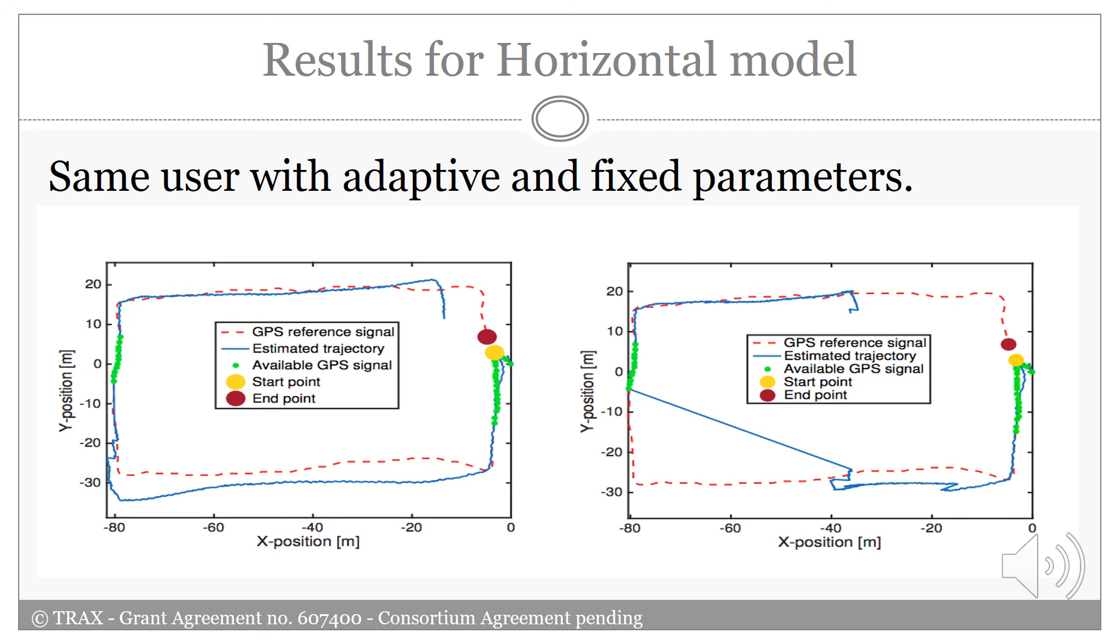In the right figure, the fixed threshold is used and applied to the same measurement set as used in the left figure, which adaptive threshold is applied. As I mentioned before, the green dots indicate the GPS signal is available. As you can see, the right figure shows how large influence poorly chosen gate parameters can have on the end result when compared to adaptively choosing the parameters.